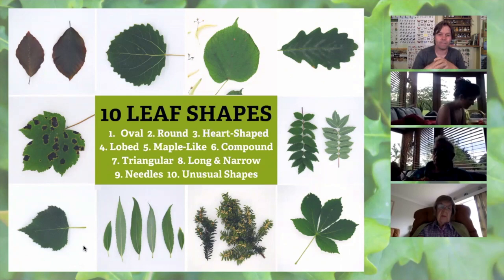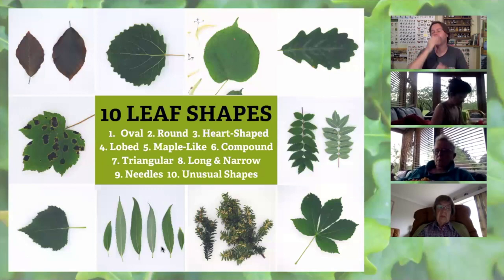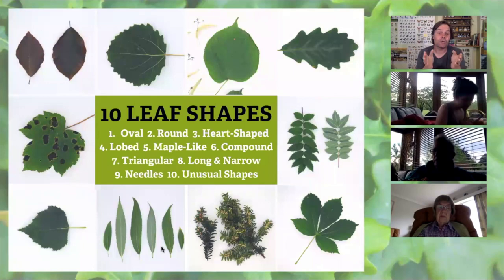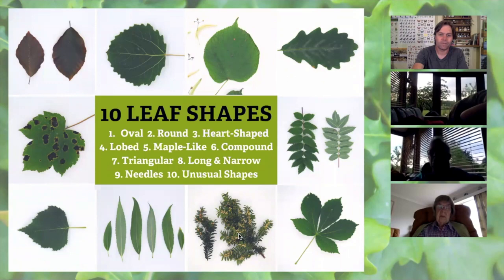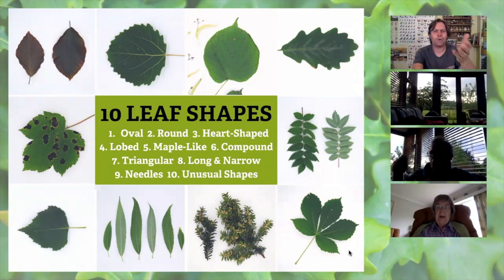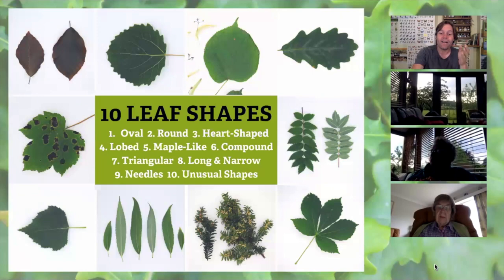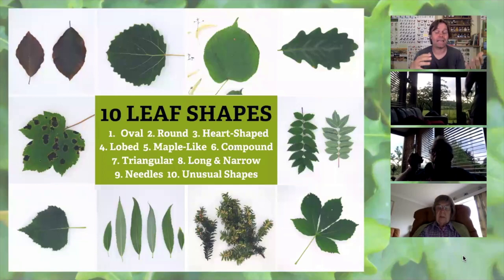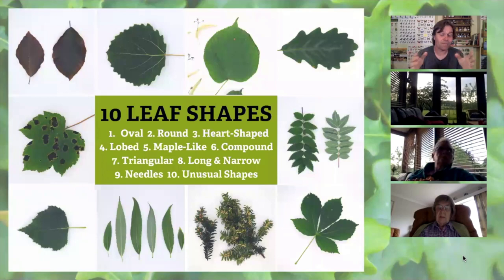Long and narrow leaves — can anyone recognize those? They're willow leaves. Not all willows are long and narrow, but it's a good shape to know. Needles are easy to parcel off — anything that's a conifer. And then there are unusual shapes that don't fit neatly elsewhere, like horse chestnut, which is compound and palmate. Unusually shaped leaves are actually quite useful — if it doesn't look like anything else, you've got a great chance of ID-ing it.